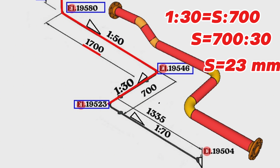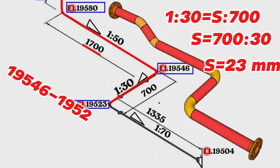Let's check this with a different method using elevation levels. From 19,546 millimeters, which is the height level of the turn to the west point, we subtract 19,523 millimeters, which is the height level of the turn to the south point of the pipeline. 19,546 minus 19,523 equals 23 millimeters. It means the slope of this part of the pipeline over 700 millimeters distance is 23 millimeters.